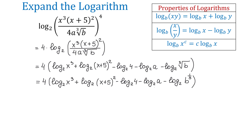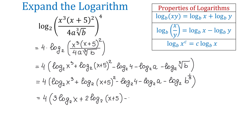Now let's move each exponent in front of the logarithms. Bringing 4 down and starting the parenthesis, we get 3 times log base 2 of x plus 2 times log base 2 of x plus 5. For log base 2 of 4, we can evaluate it directly: base 2 to what power makes 4? That would be 2, so the value of this logarithm is 2. We write minus 2, then minus log base 2 of a, minus 1 third times log base 2 of b. From here, we could distribute the 4 and remove the parenthesis, or leave the answer as it is.